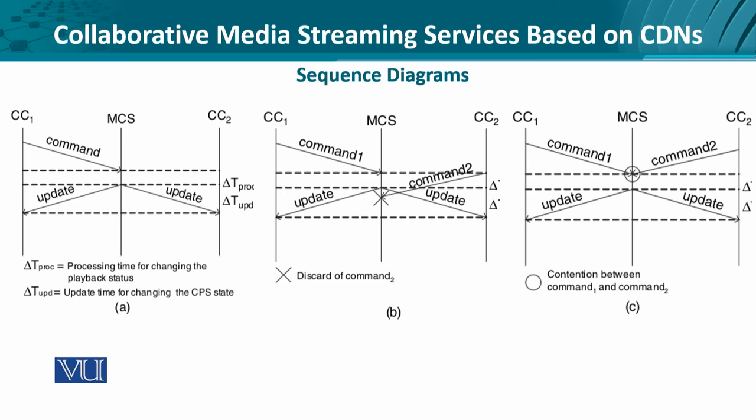In the third situation, some kind of contention occurs because two commands from two different clients reach the server at exactly the same time. A conflict resolution strategy is needed — for instance, based on identifier priority, who has the higher identifier, what is the precedent in terms of queuing, or privileged organizer-level administrative users could be given preference. Using these three possible scenarios or their variants, a collaborative media streaming service could be realized and an interesting playout can be visualized across the content delivery network.